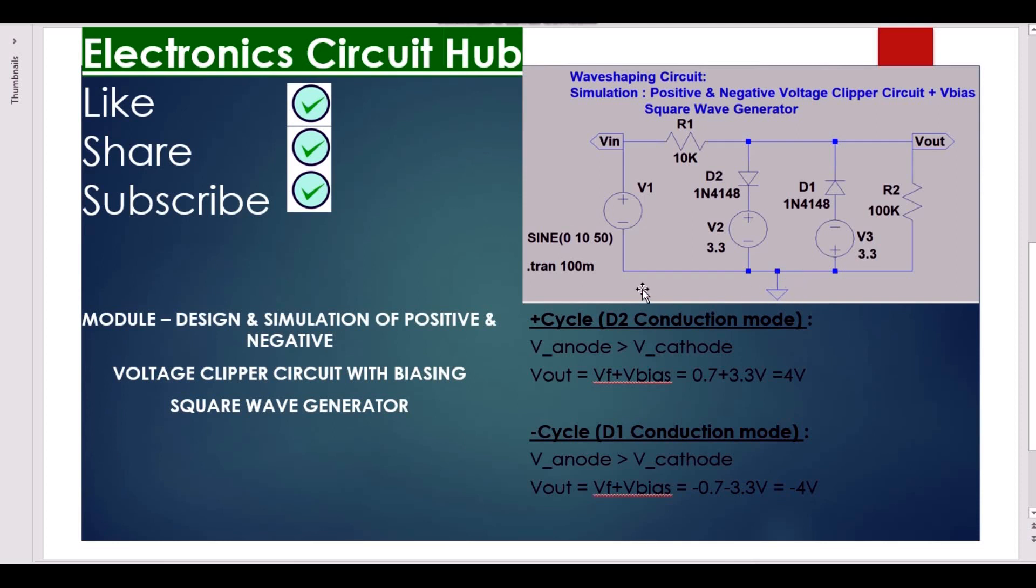For the positive half cycle of sinusoidal wave, diode D2 conducts, it goes in conduction mode. So V output equals V forward voltage plus V bias voltage, that equals 0.7 plus 3.3, that is equal to 4 volts.